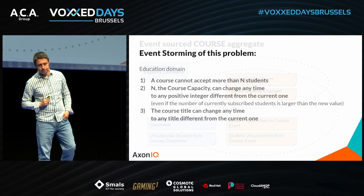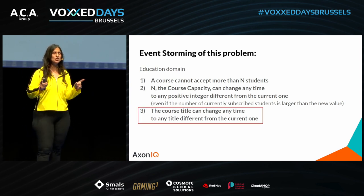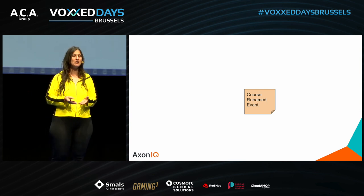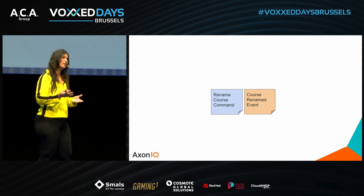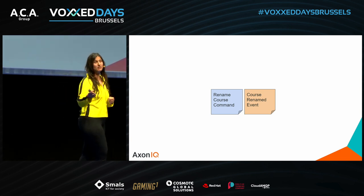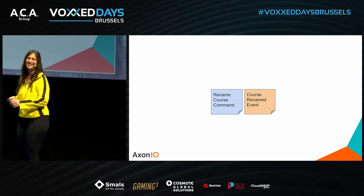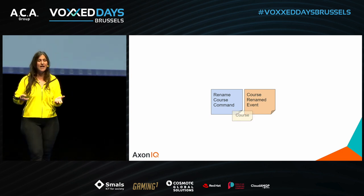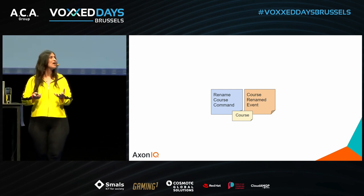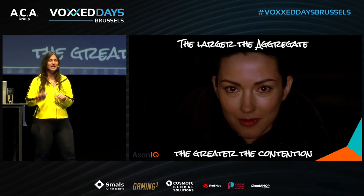Let's increase the complexity with a new rule: the course title can change any time to any title different from the current one. We need a new event — course-has-been-renamed — and a new command that triggers it. Who is the aggregate this event and command belong to? Of course — the course. The course aggregate is now a little bit larger, and while it may seem irrelevant, be careful because it hides a pitfall.